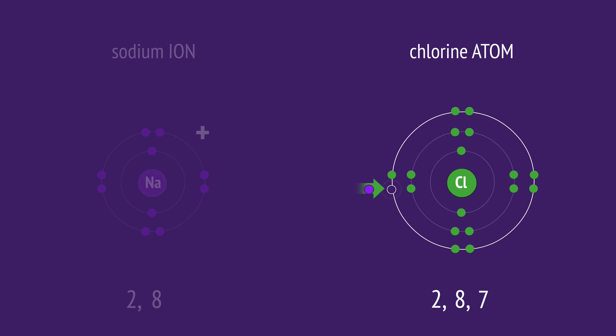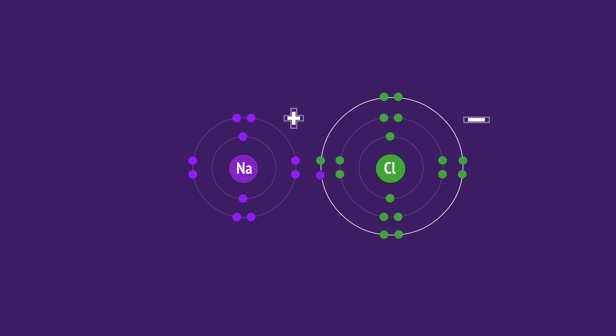Chlorine takes the electron from sodium to complete its outer shell, resulting in a chloride ion with a 1 minus charge, since it now has one more electron than it has protons. The strong attraction of the opposite charges creates the ionic bond between the ions.